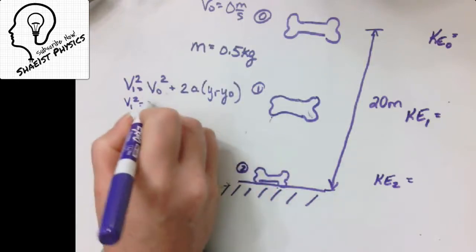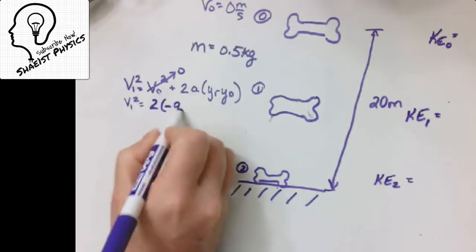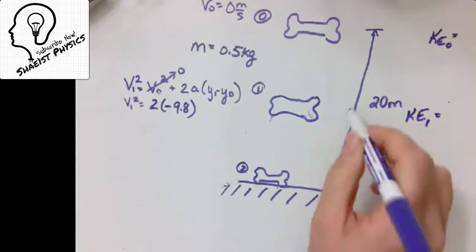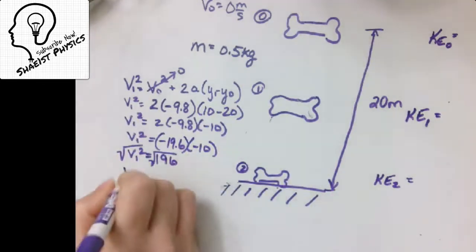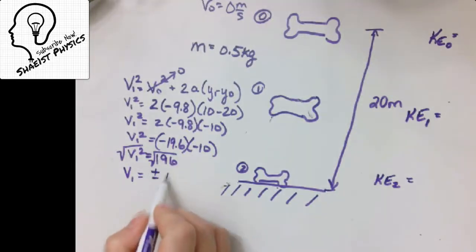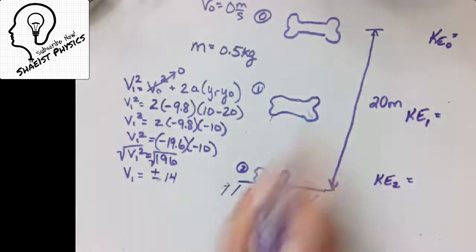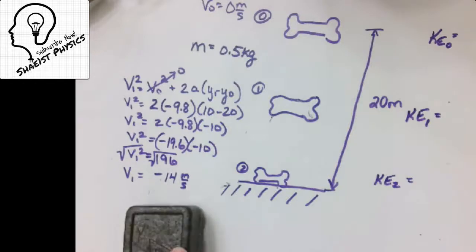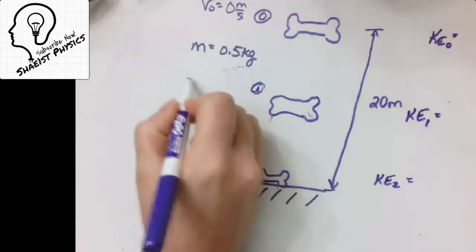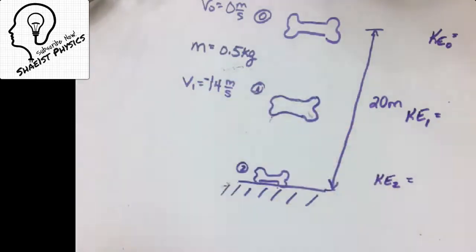My initial velocity is 0, so that term drops out. My acceleration is −9.8. My final position is 10 meters and my initial position is 20 meters. When we take the square root we get either negative or positive 14, and since the velocity is going down, we choose negative. So the velocity at moment 1 is −14 meters per second.